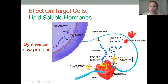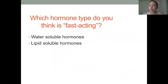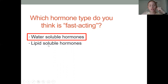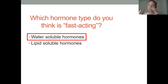Thinking about the types of things hormones do — water-soluble hormones would be fast-acting, since they're just opening and closing things or causing secretion. Lipid-soluble hormones are slow-acting because they have to enter the nucleus, undergo transcription then translation, making entirely new proteins that change gene expression for those cells.